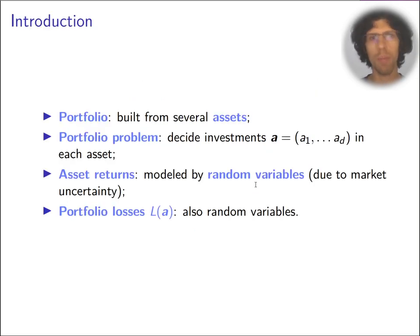A portfolio problem typically is to decide how much we're going to invest in several assets that we have in our disposition. The asset returns are typically modeled by random variables and therefore the losses of the portfolio are also random variables. The way to integrate that into the model and into an optimization problem is going to be the main focus here today.